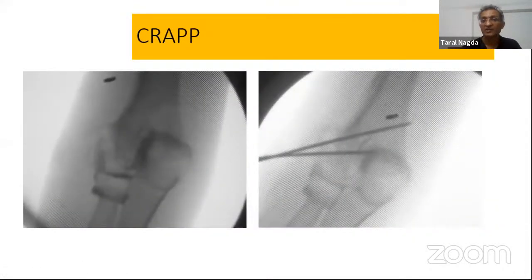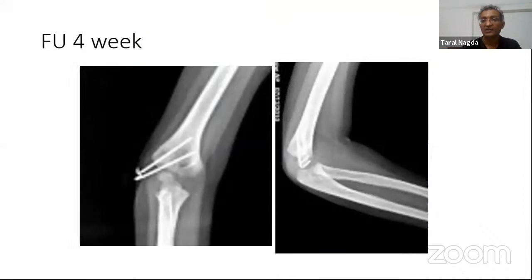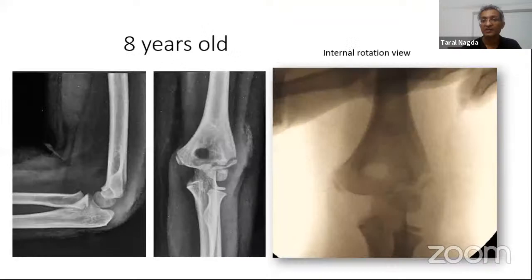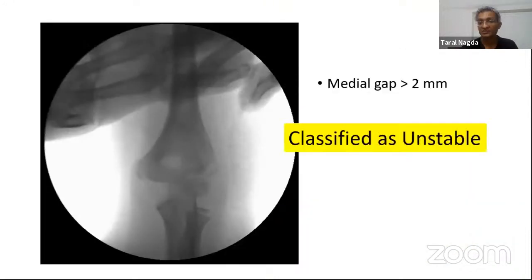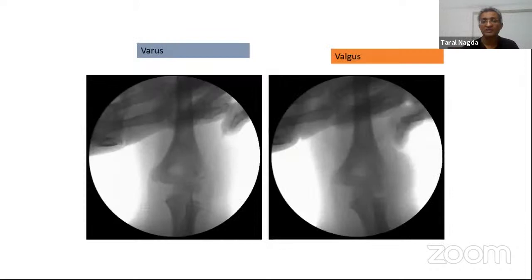Based on the MRI findings, this patient required closed reduction and pinning. This was the third patient — on the internal rotation view, the articular cartilage is clearly broken and the medial and lateral gaps are almost equal. No investigation is needed in this case — you take these patients straight for closed reduction and pin fixation.